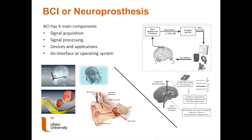BCIs involve four main components: signal acquisition, signal processing, devices, and an interface or operating system. These differ from what people sometimes refer to as neuroprostheses. You can see the standard BCI loop where signals are recorded either invasively or non-invasively, translated through signal processing tools into a control signal, and feedback is given to the user so they can learn from their brain wave activity.